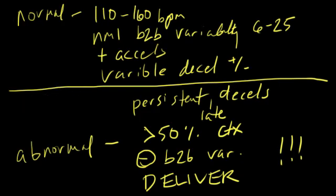So what about all the stuff that's in between these? Well, this is the third category that ACOG has, and they just call this indeterminate. So let's go to the next slide and talk about indeterminate, the indeterminate category.